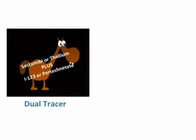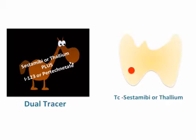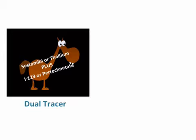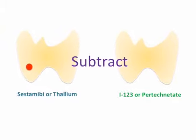Now let's talk about the dual tracer technique. Two different agents are used and then a subtraction is performed. The first agent is chosen because it goes to both thyroid and parathyroid — options are sestamibi or thallium. The second agent is chosen because it only goes to the thyroid — options are iodine or pertechnetate. You subtract, and what you're left with is anything remaining, which could be a parathyroid adenoma.